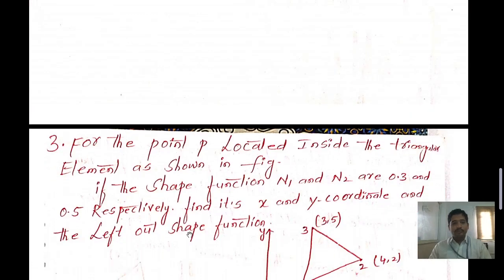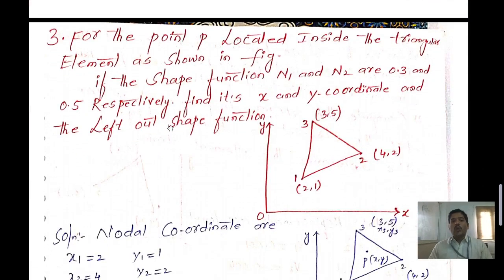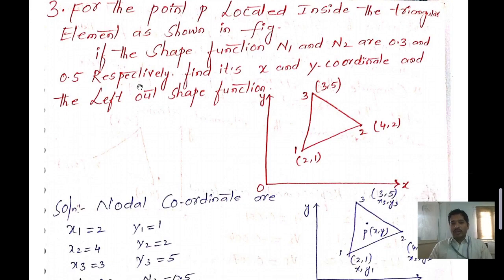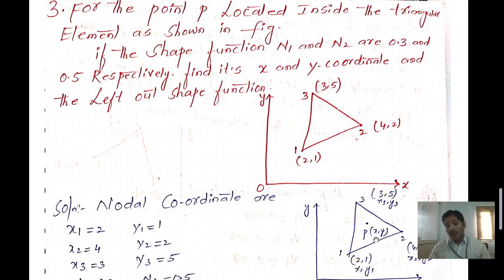Next is the third problem. For point P located inside the triangular element as shown in the figure, the shape functions n1 = 0.3 and n2 = 0.5 are given. We need to find the x coordinate, the y coordinate, and the remaining shape function n3.